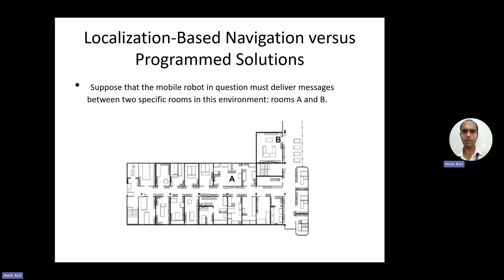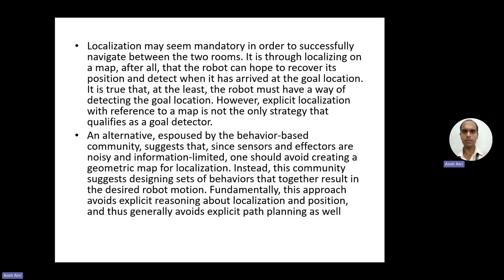Two types of approaches are available here. Localization may seem mandatory in order to successfully navigate between two rooms — room A and room B. It is through localizing on a map that the robot can hope to recover its position and detect when it has arrived at the goal position. Room A is the initial position and the robot has to move to the goal position in room B.